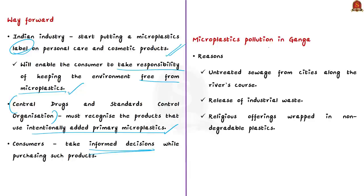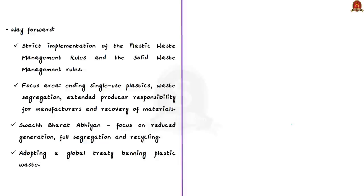Coming to the editorial, the main reason for microplastic pollution in river Ganga is untreated sewage from cities along the river's course. Other factors include release of industrial waste into the river. Even religious offerings are a main reason — offerings wrapped in non-degradable plastics are thrown into the river. These plastic products and waste materials dumped in the river break down and are eventually reduced to microparticles, which are ultimately carried into the oceans by river water, polluting the ocean as well.